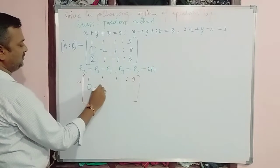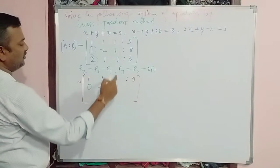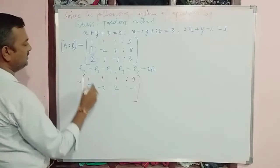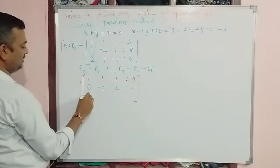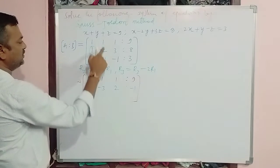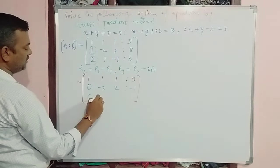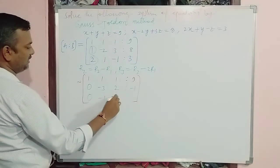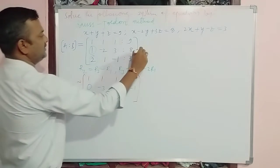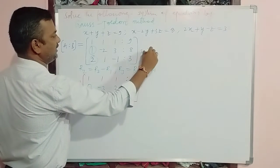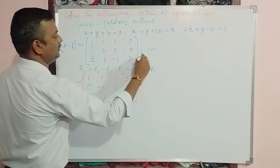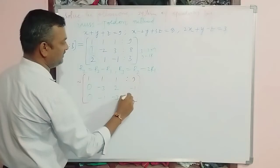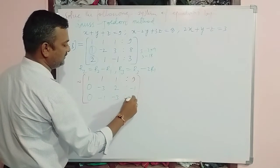After the row operations, the result is: row 2 becomes 0, -3, 2 | -1, and row 3: 0, -1, -3 | -15. Specifically, -1 minus 2 times 1 is -3; 3 minus 18 is -15.